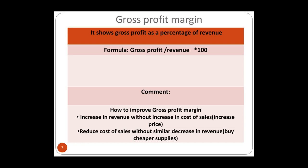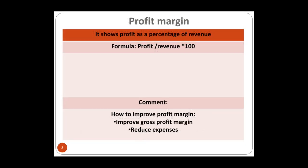Gross profit margin measures the percentage of gross profit out of sales. To improve it, you can increase revenue or reduce cost of sales, which will improve gross profit and therefore the gross profit margin. That is the first ratio.